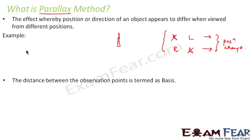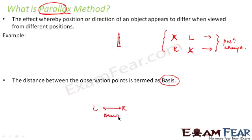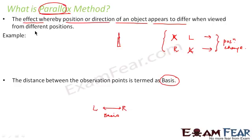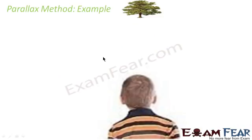The distance between these two different observation points is known as the basis, and this phenomenon is known as parallax. In our example, the distance between the left eye and the right eye is the basis. The phenomenon that when you close your left eye, you see the object's position slightly changed compared to when you close your right eye — this entire phenomenon is referred to as parallax. Now we will take an example and see how we apply the parallax method.